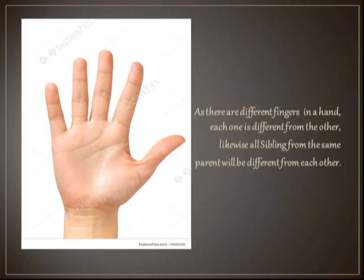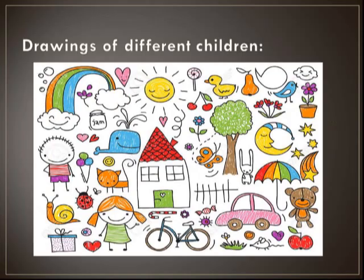As we have different fingers in a hand, each one is different from the other. Likewise, all siblings from the same parent will be different from each other. If some children around your age have drawn figures, you would not find any drawings similar to each other. The chances are that one drawing is different from the other, because each one has a unique drawing style.